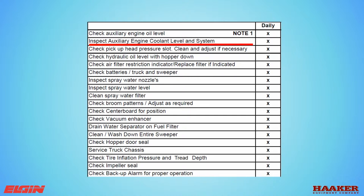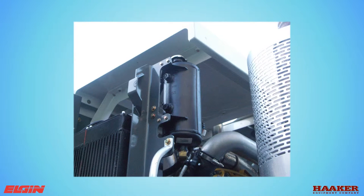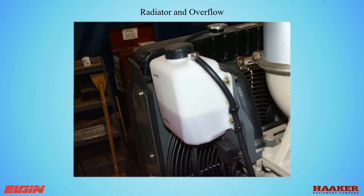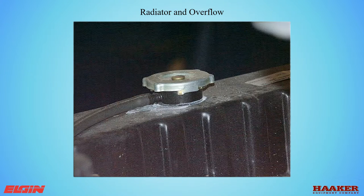Inspect the auxiliary engine coolant level. The Tier 4 system has a reservoir with sight glasses to check the coolant level. Older systems have an overflow bottle near the radiator. Always check the radiator cold to assure proper level. Elgin uses ethylene glycol antifreeze.